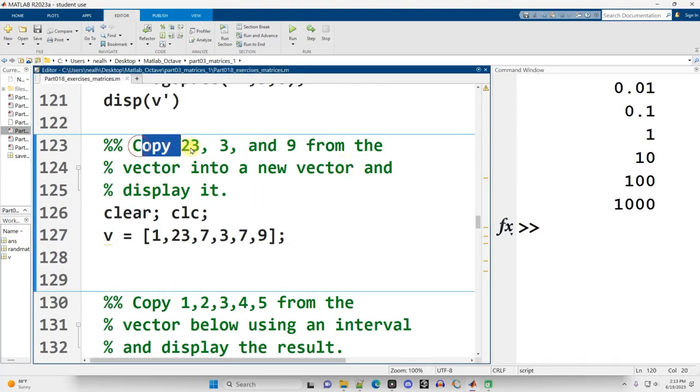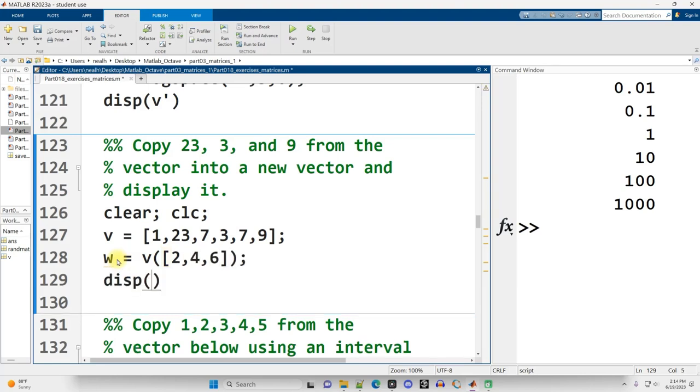Continuing on down. Copy 23, 3, and 9 from the vector into a new vector and display it. Okay, so here's V. I'll name my new vector W. And W is going to be, from V, the values at positions 2, 4, and 6. And then I'll go ahead and display it out. And there they are. There are other ways to do this.